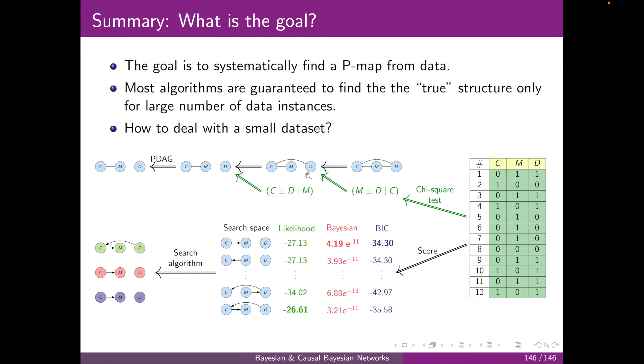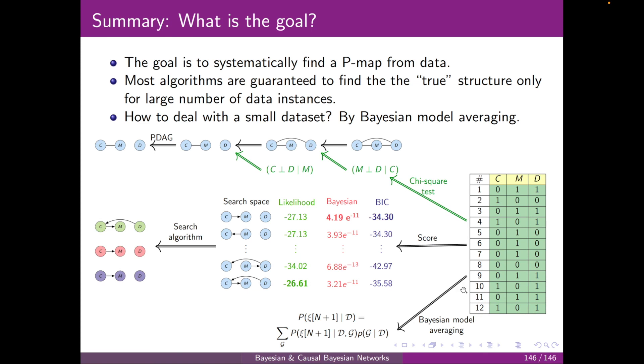To summarize, we saw that most algorithms are guaranteed to find the true structure only for a large number of data instances. And the question was how to deal with small datasets. And the answer is by Bayesian model averaging. Here I provided the formula for prediction making. Thank you for your attention.